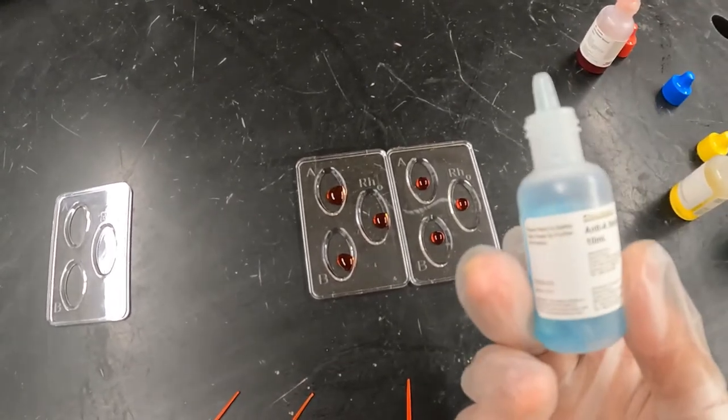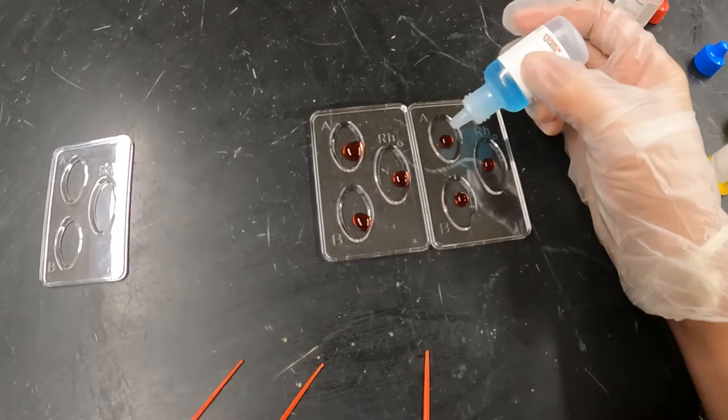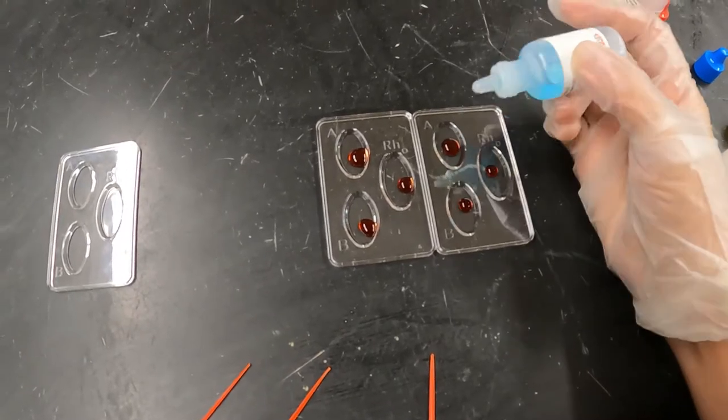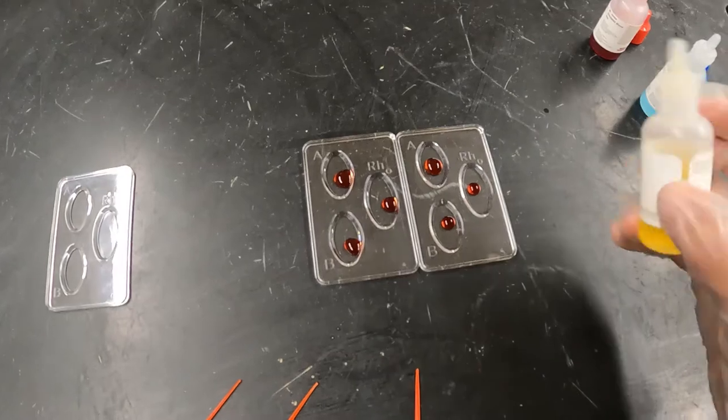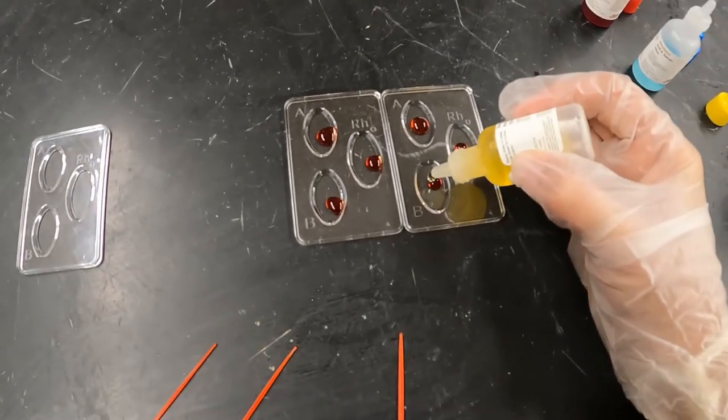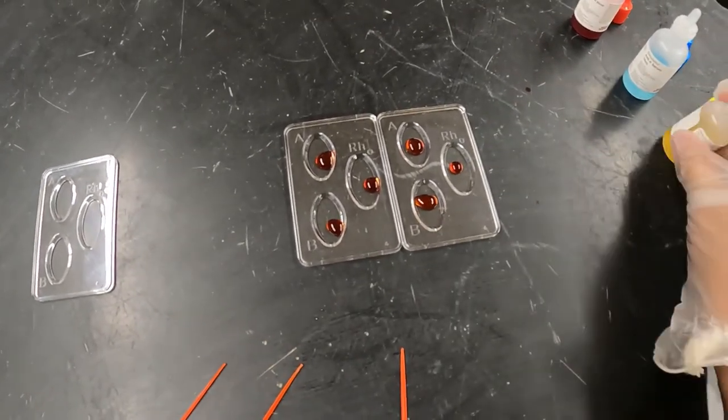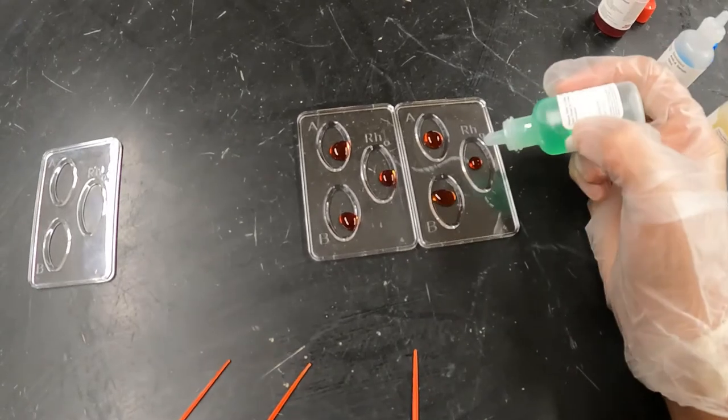Then you're going to take the anti-serum and place it on the correct well. Don't touch it to the well, but a couple of drops inside for each. So I put my anti-serum for A, putting in my anti-serum for B, and then I'm putting my anti-RH.